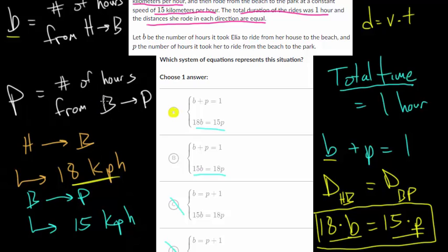We knew that since she was going faster from the house to the beach, that B would be a slightly less amount of time than the time it took from the beach to the park. So this does match up with our intuition, and we can feel confident that choice letter A is the right answer.